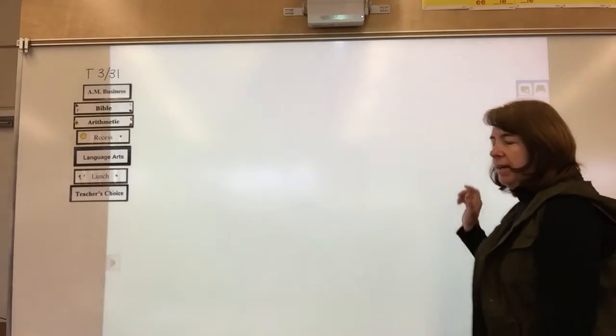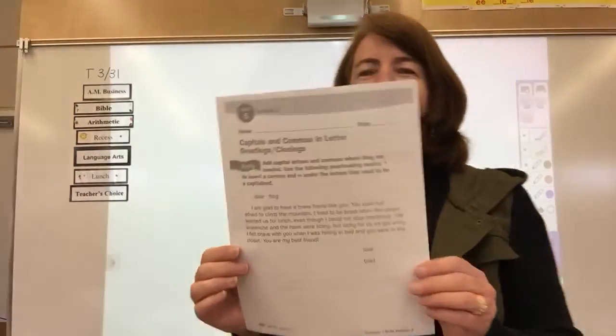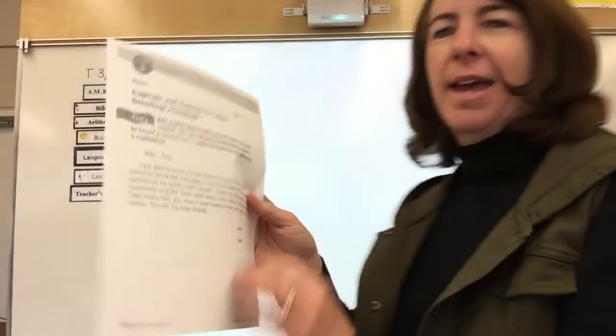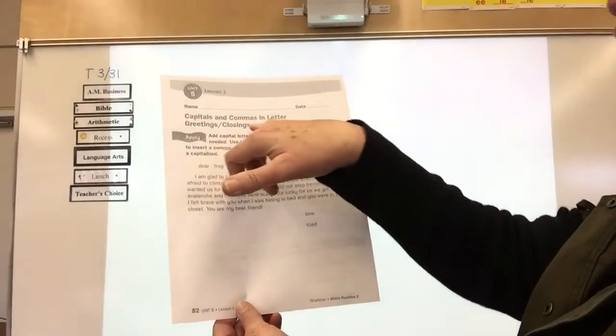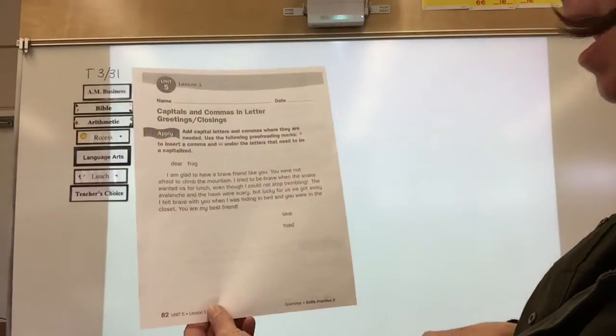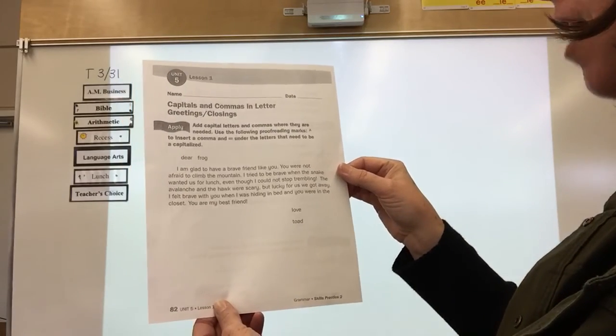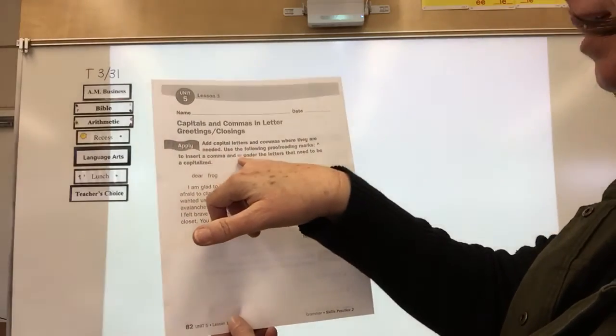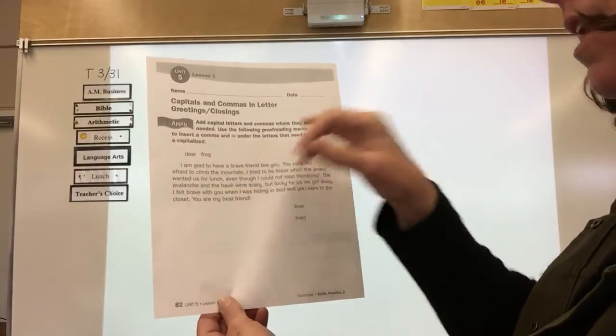All right. Now I don't have it, but I do have it right here. So you should be looking at yours. I'm going to be looking at mine. And here we go. Capitals and commas in letter greetings and closings apply. Add capital letters and commas where they are needed. Use the following proofreader marks. The caret to insert a comma and three lines under the letters that need to be capitalized. And then here's the letter.